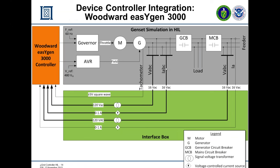We tricked the Woodward EasyGens into thinking they were controlling a real genset by modeling the motor generator and two circuit breakers, creating governor and AVR models. In the Opal RT unit, we took out tachometer voltage-current signals at 16 volts AC, then worked with Opal to develop an interface box that translates those signals — converting 16V AC measurements to 120V AC — which are fed into the Woodward EasyGen, which then controls the simulated genset via AVR and governor signals.